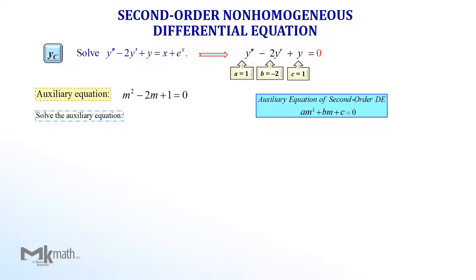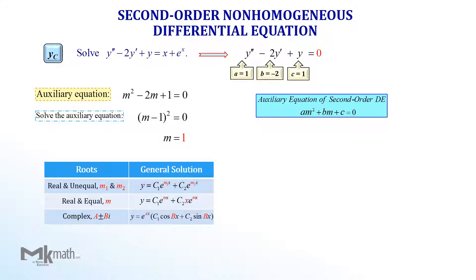Let's solve the auxiliary equation by factoring method if possible; if not, we need to use the quadratic formula. We can factor it by completing the square as (m minus 1) squared equals 0. Therefore the root is m equals 1. Since we found the root m equals 1 — a double root — we now need to select the appropriate solution type for Yc. As you can see in the table, there are three types of solutions; our root m equals 1 is a double root, so we select the second type.